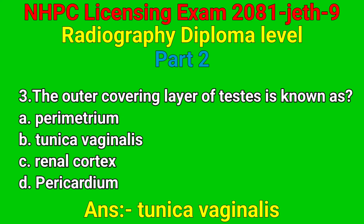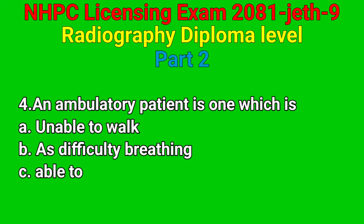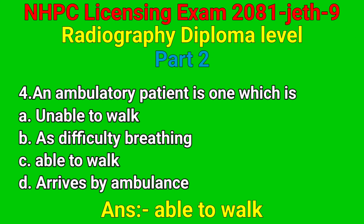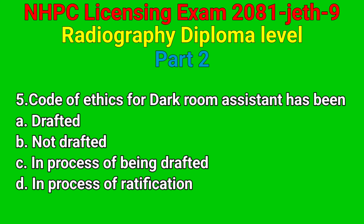Question number three: the outer covering layer of testes is known as — option A, B, C, D. Correct answer: option B — tunica vaginalis. Question number four: any ambulatory fashion is one which is — option A, B, C, D.